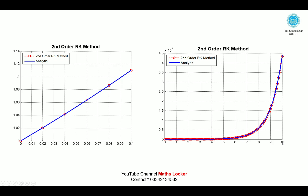Over the interval 0 to 10, the blue line (analytical solution) and red line (numerical RK2 solution) overlap. However, when taking a large interval such as 0 to 100, error may accumulate. To reduce this error, we will need to use the fourth-order RK method. The next lecture will be on the fourth-order RK method.